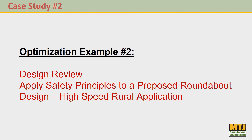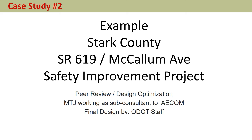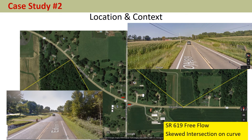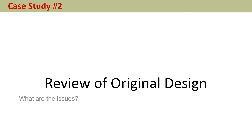Here's optimization example number two: the Stark County State Route 619 and McCallum Avenue safety improvement project in Ohio. The location is in a rural area with curvature on the roads, some driveways, and residential context. It's currently a free-flow condition — pretty wide open — but the roundabout is on a curve and at a skewed intersection, creating challenges. State Route 619 is free-flow, and we're going to put in a roundabout.